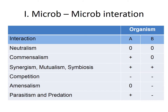Let's simplify all these interactions in a table. The first interaction is neutralism. Here we have two organisms, A and B. If A is present without affecting B in any way, and B is present without affecting A in any way, we call this a neutralistic relationship — no gain, no loss, denoted as zero.